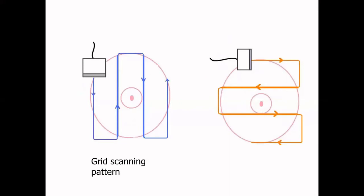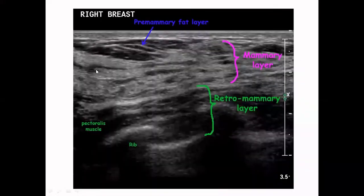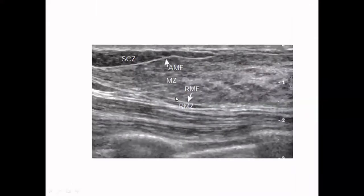The fatty layer consists of glandular elements which appear hypoechoic, and fibrous stroma which appears hyperechoic. On the ultrasound image we can identify the subcutaneous zone, the anterior mammary fascia (superficial layer of superficial fascia), the retromammary fascia, the retromammary zone, and the pectoralis muscle.